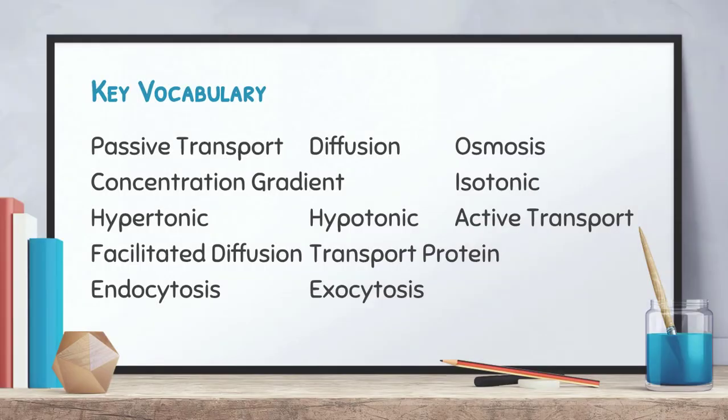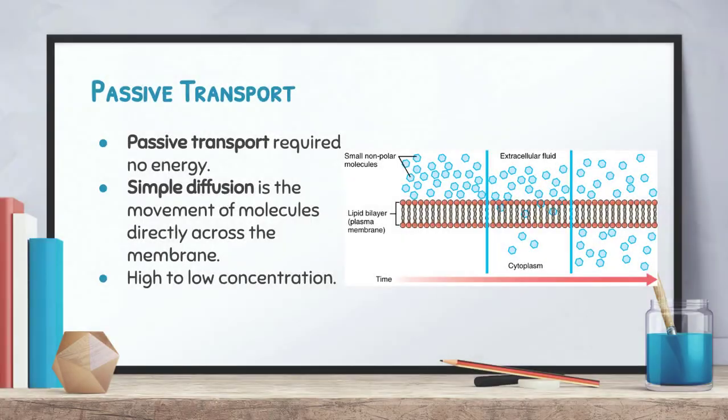Vocabulary is a very big thing in biology class, and this video is no exception. Hopefully you'll understand what these terms are as we go through and continue to work on them in class. Let's talk about the different types of ways that materials are transported in and out of the cell — the first one is known as passive transport.